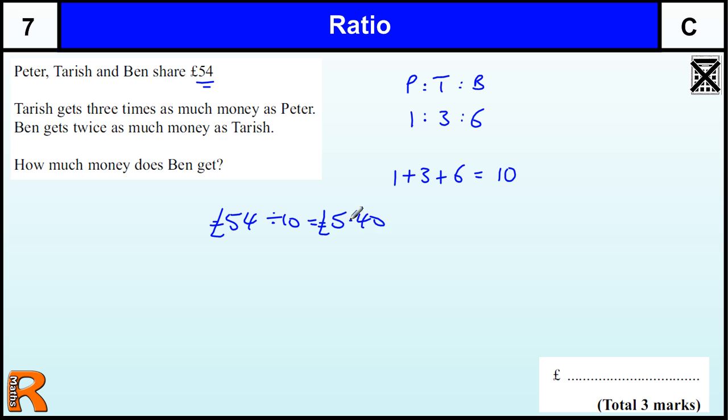So Peter will get 5 pound 40, Tarish will get three times that, Ben's going to get 5 pound 40 times by six.